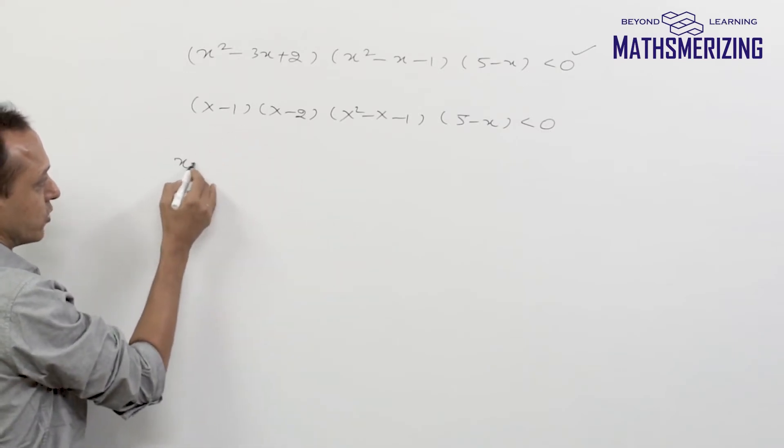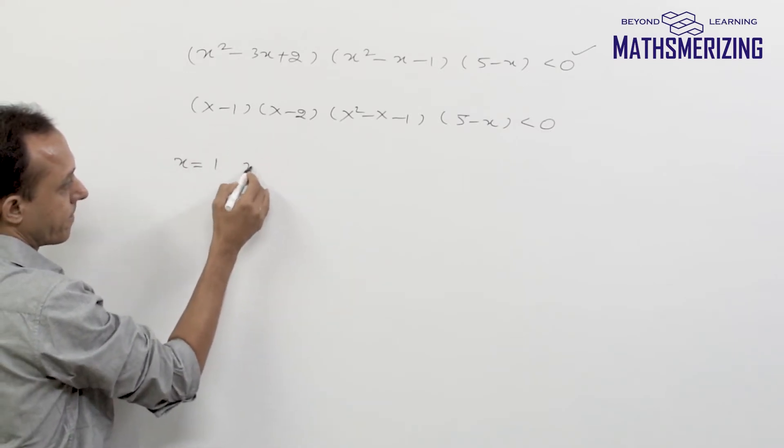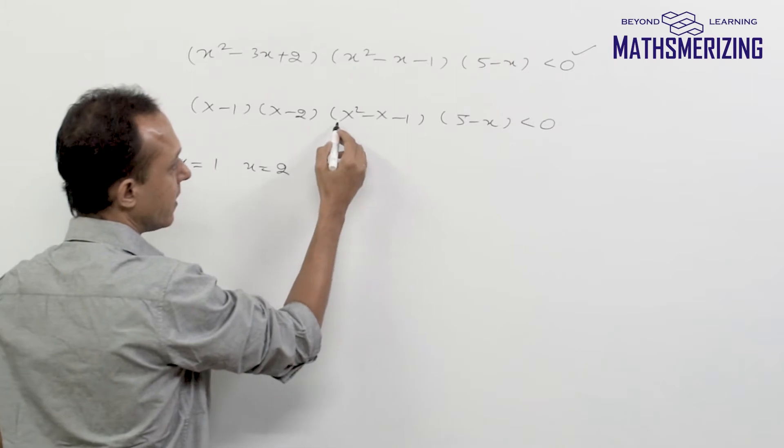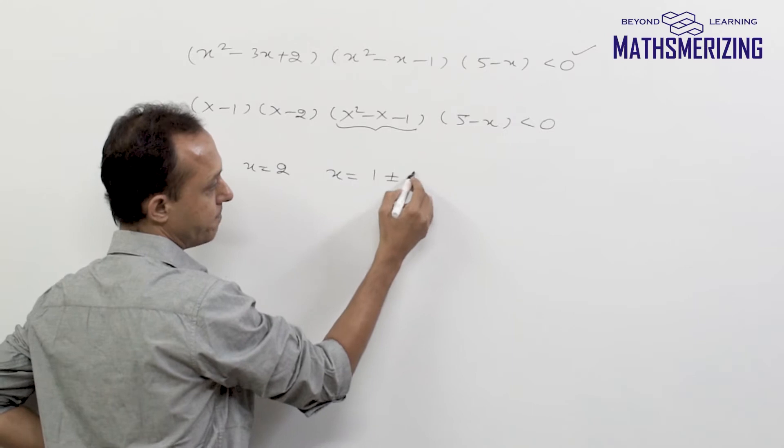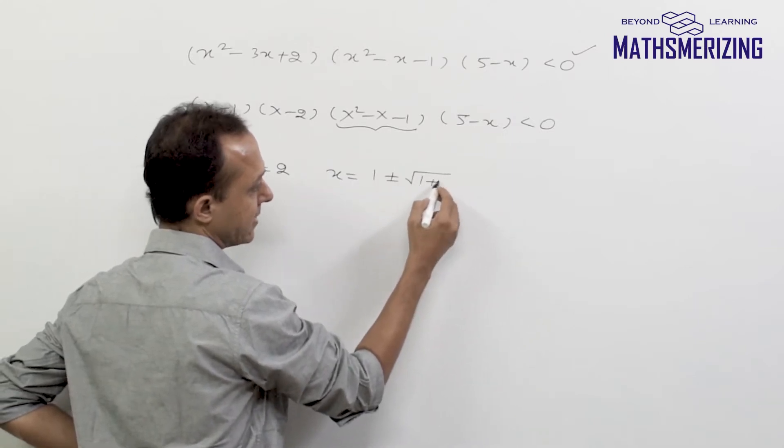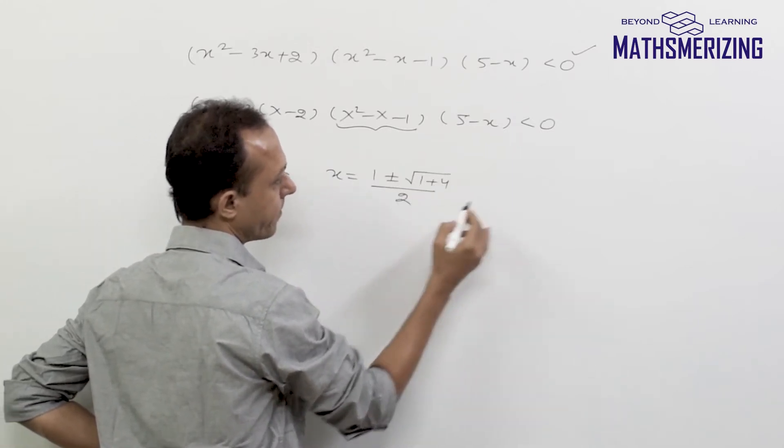So roots are x equals 1, x equals 2. Now what about this one? For this one I'll simply use minus b plus minus square root of b squared minus 4ac upon 2a.